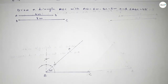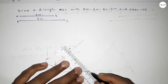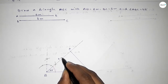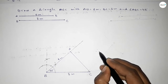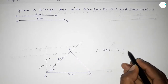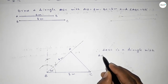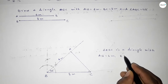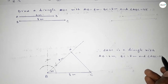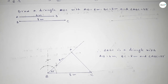Now joining A and C to get triangle ABC. This side is 8 centimeter and this side is 6 centimeter. Therefore, triangle ABC is a triangle with AB equal to 6 centimeter, BC equal to 8 centimeter, and angle ABC equal to 45 degrees. That's all, thanks for watching, please share.